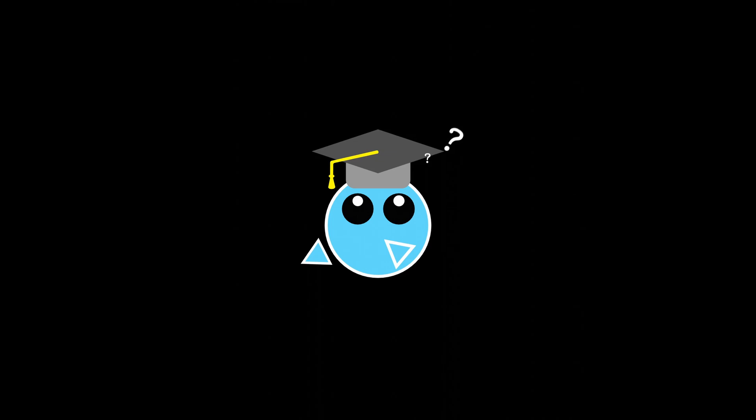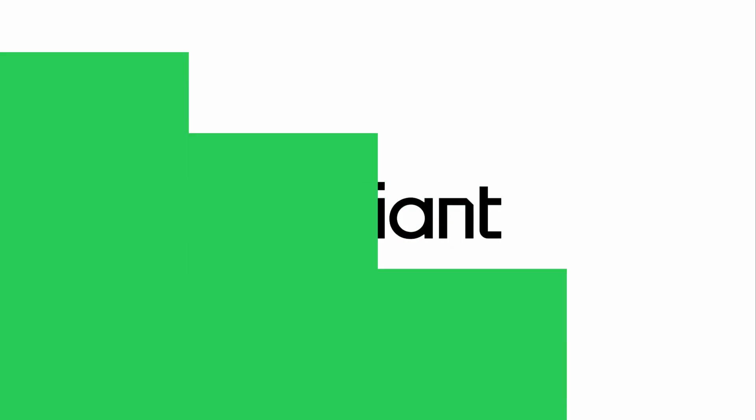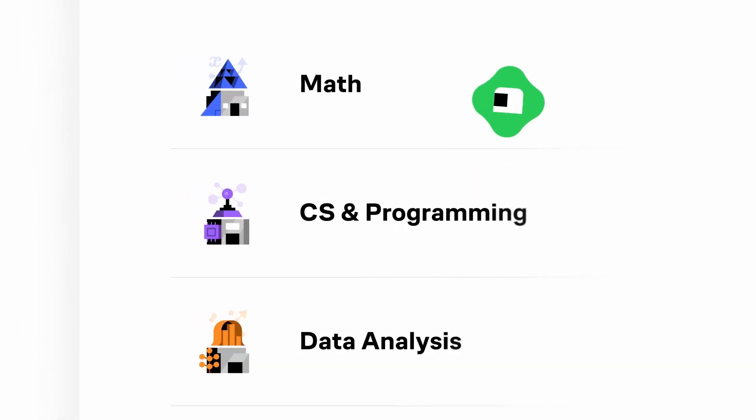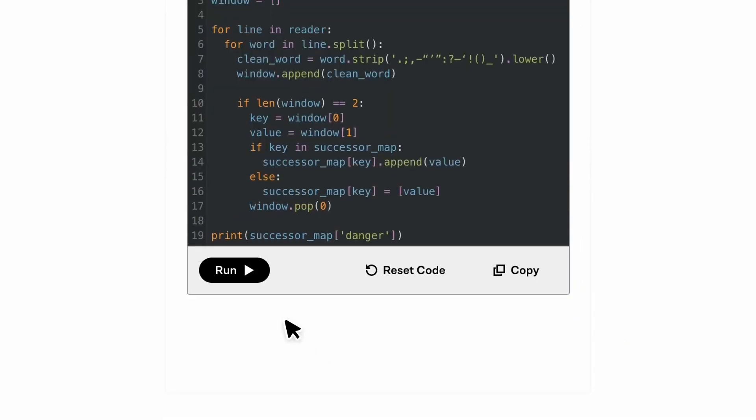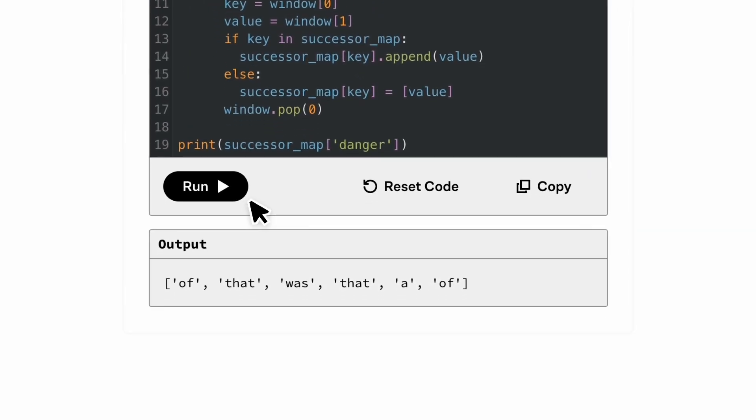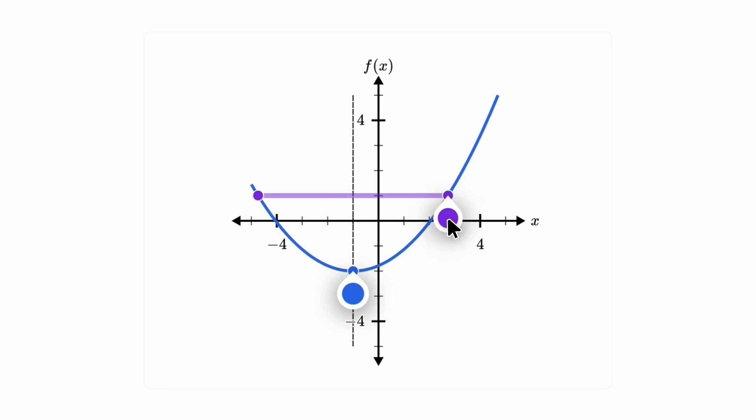Speaking of learning good representations, have you ever wondered how large language models understand the world they interact with? Well, you're in luck because this video is sponsored by Brilliant. Brilliant is an interactive learning platform that lets you dive deep into topics like math, data analysis, programming, and now even AI through hands-on problem-solving lessons.